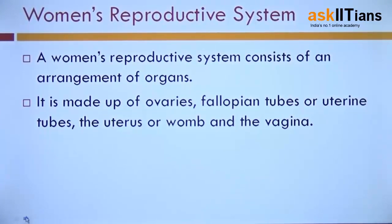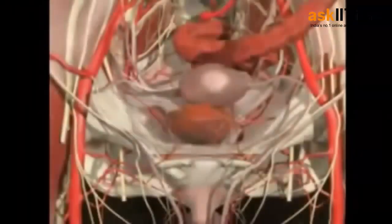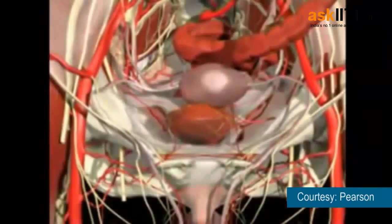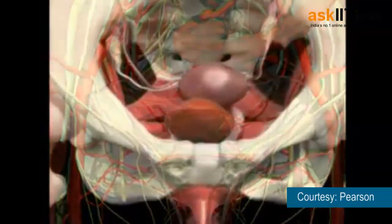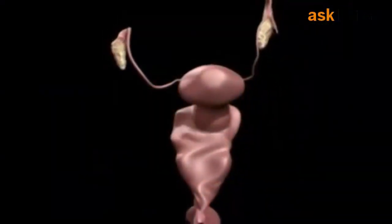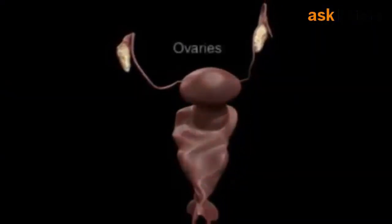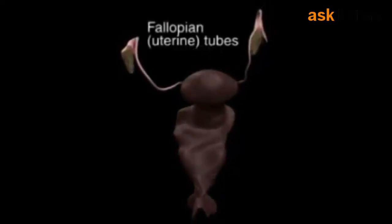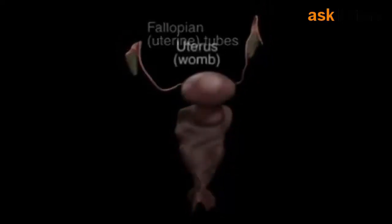Let's have a look at a video representation based on menstruation. A menstrual cycle. You can see various arrangements of organs present in a woman's reproductive system. It consists of ovaries, fallopian tubes, uterus, and the vagina.